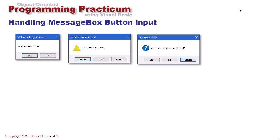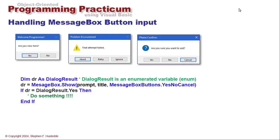We can handle which of the buttons the user has clicked. And we can do that because the message box dot show returns a value called a dialogue result.